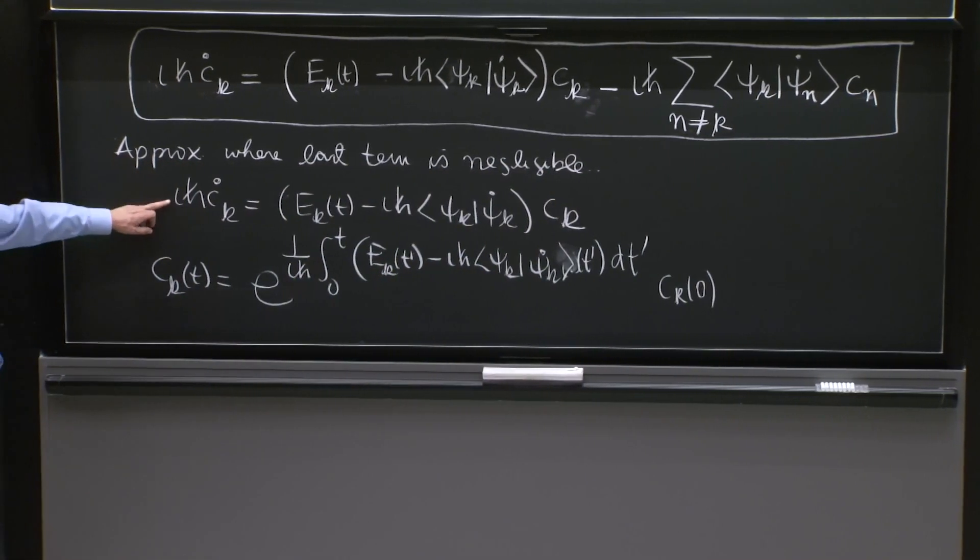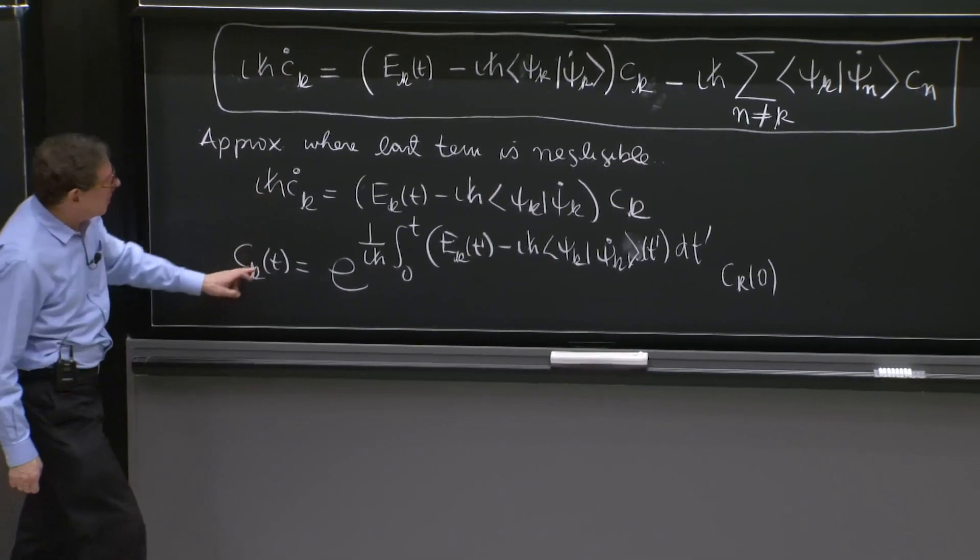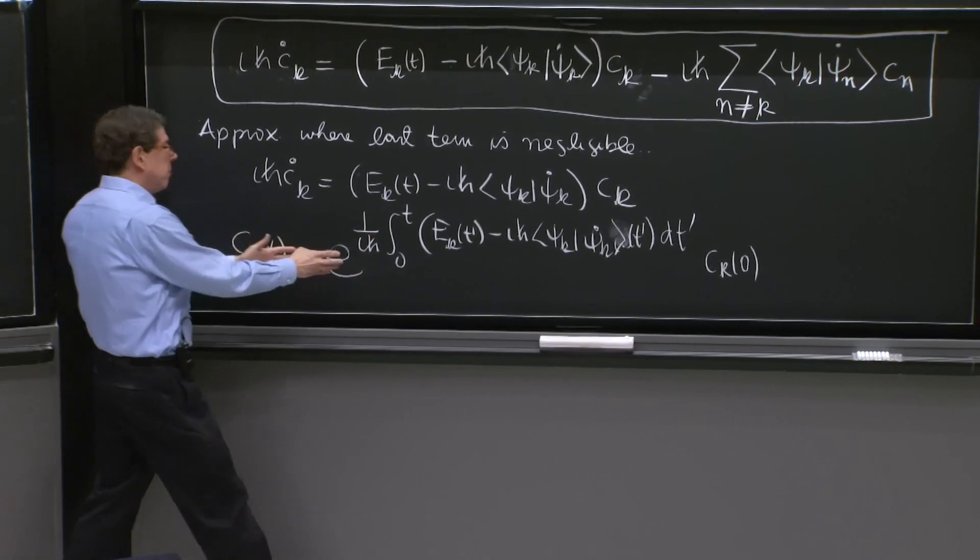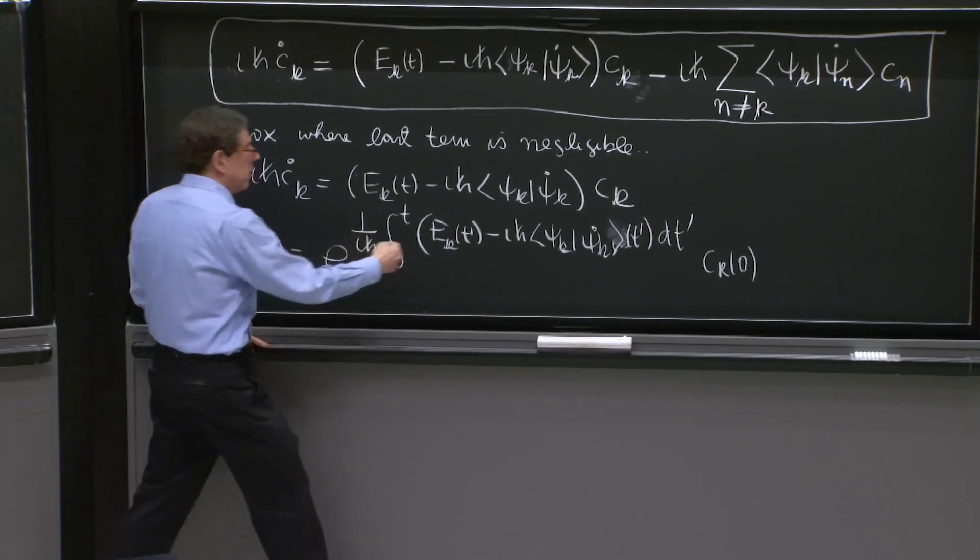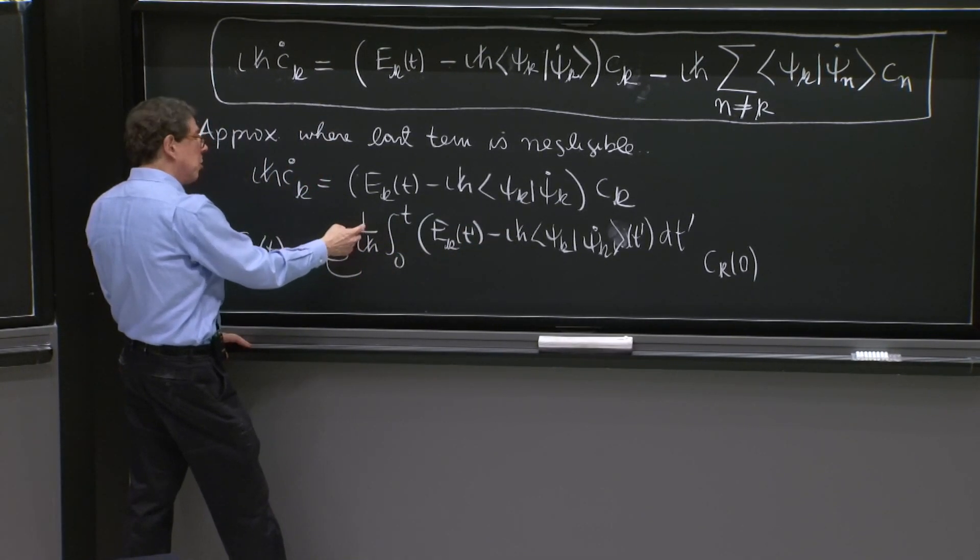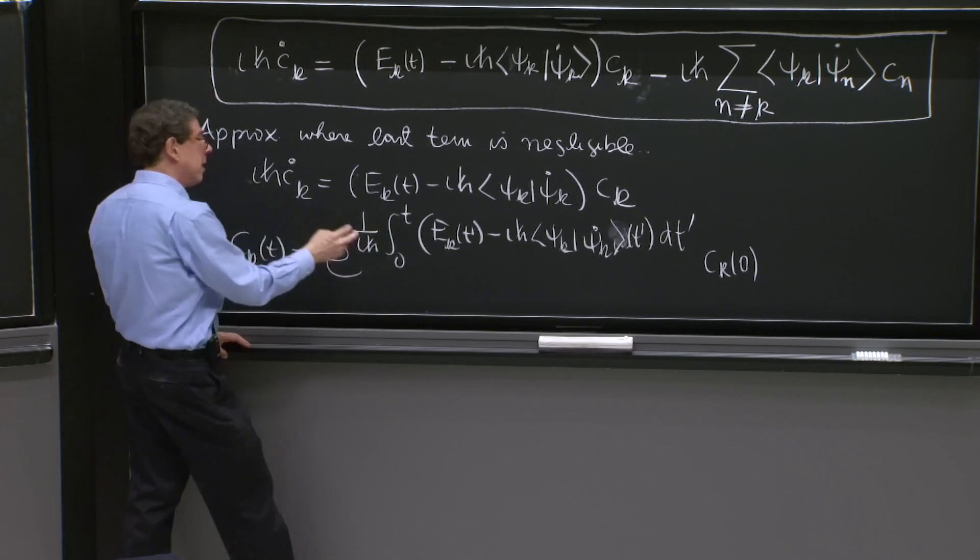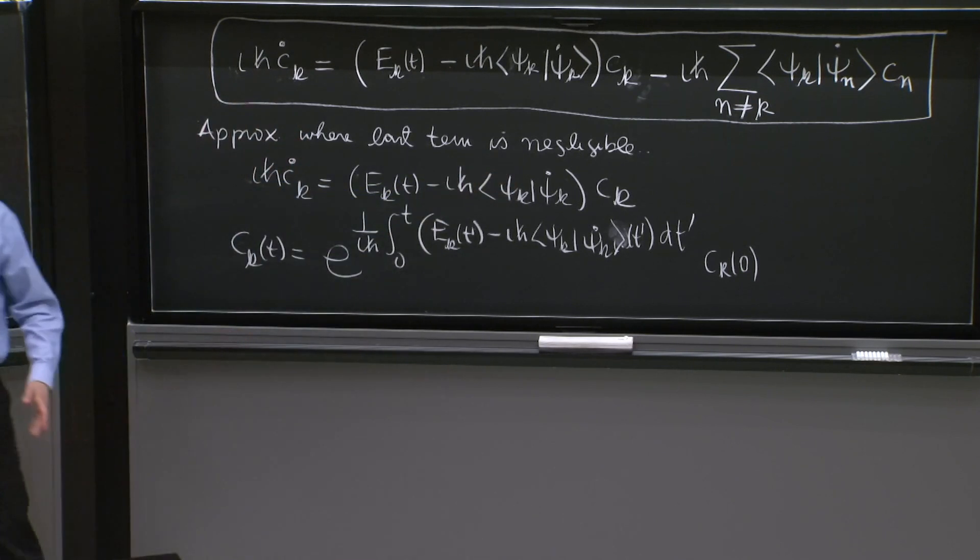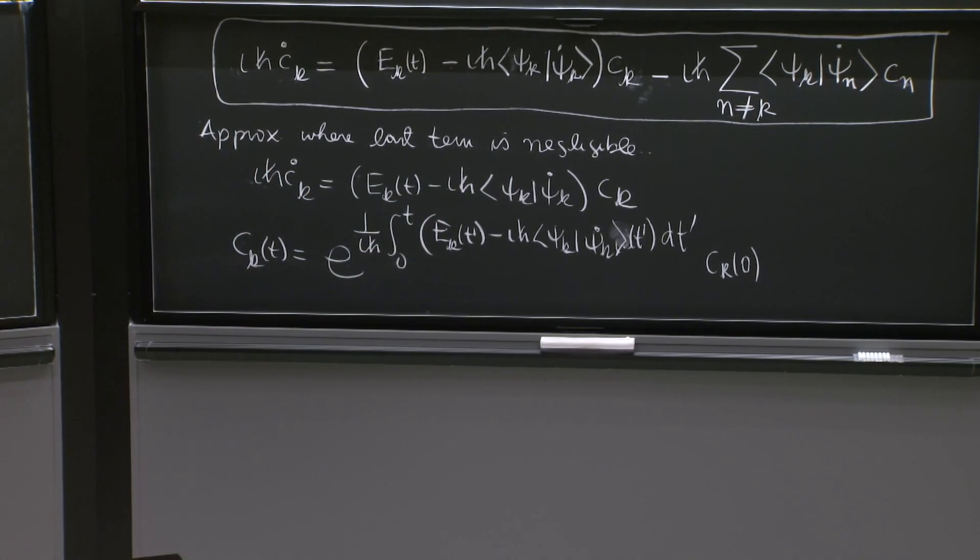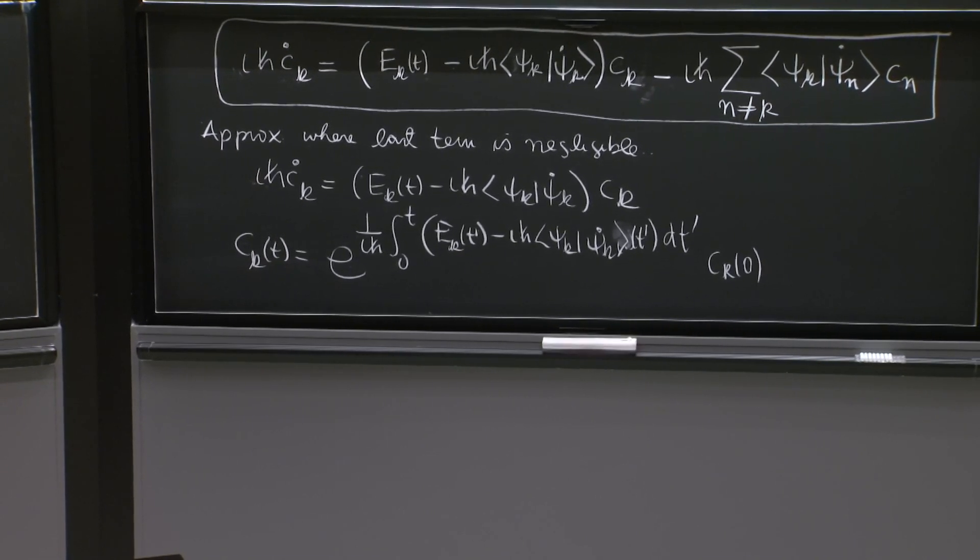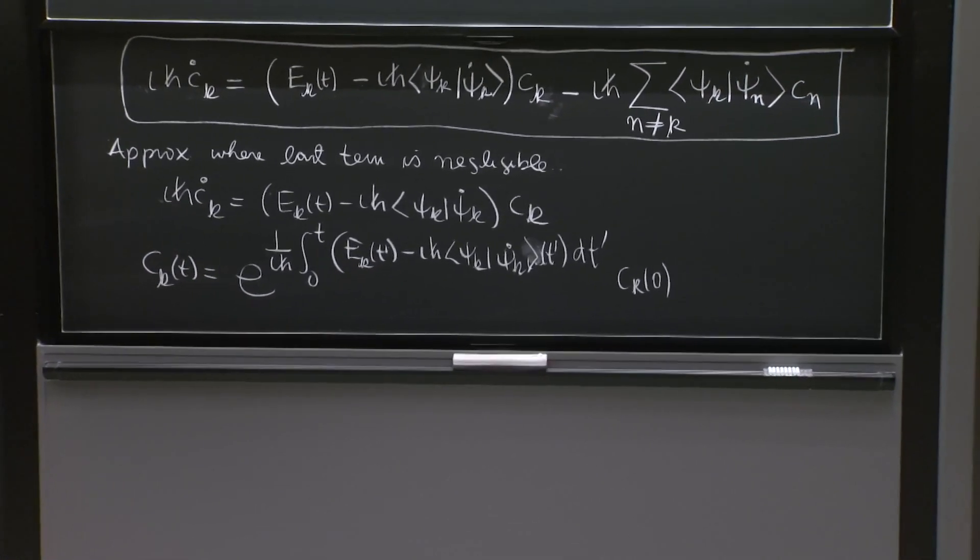This is a differential equation. So i h bar times the time derivative of this - if you apply i h bar time derivative, you differentiate with respect to time the exponent. You get 1 over i h bar that cancels this i h bar, and the derivative of the exponent is this factor. Just a standard first order time dependent differential equation.